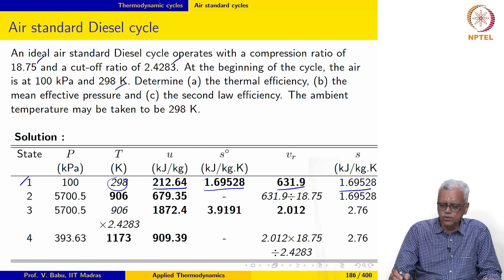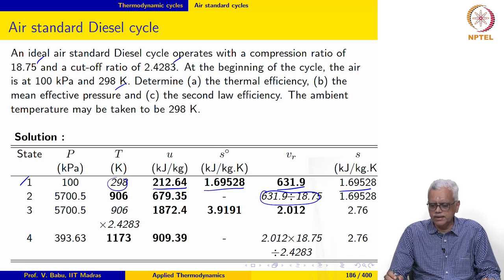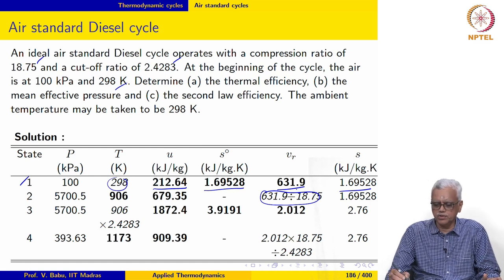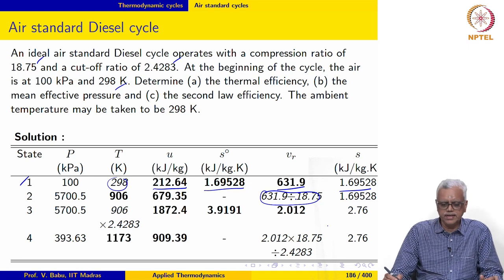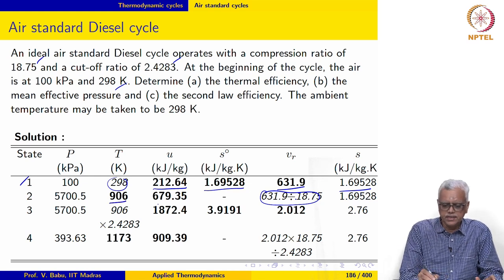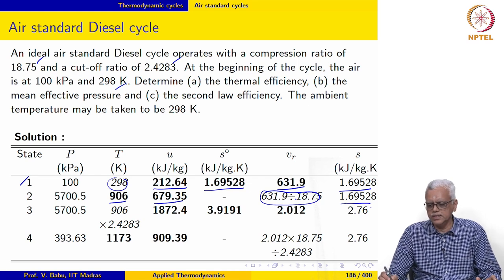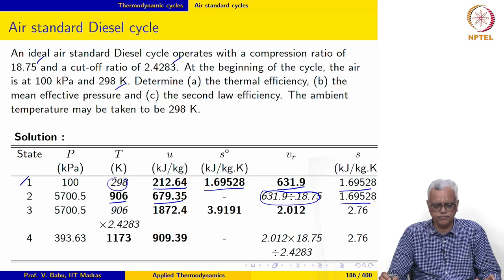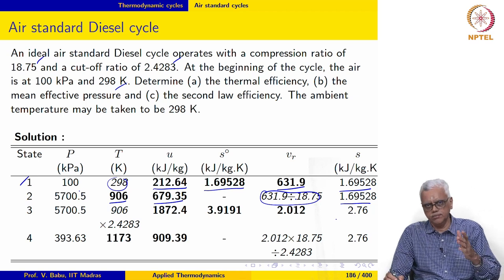Now, at state 2, Vr is equal to Vr1 divided by the compression ratio because it is an isentropic process. Using this value for Vr, we enter the tables and retrieve these values. The entropy remains the same because it is an isentropic process. I will explain in a minute how this value is computed.